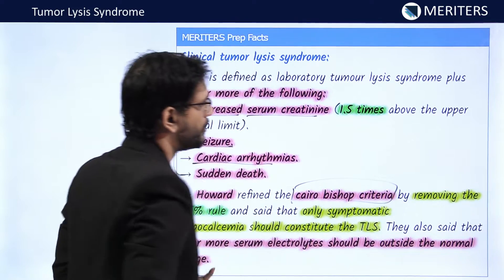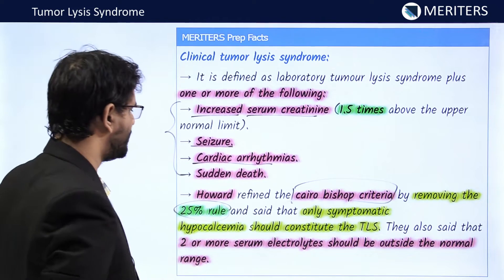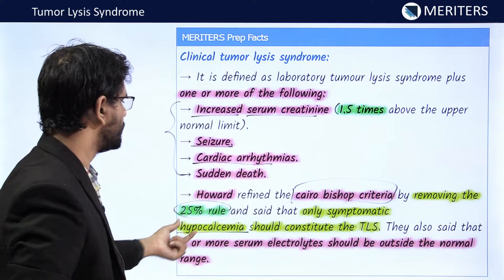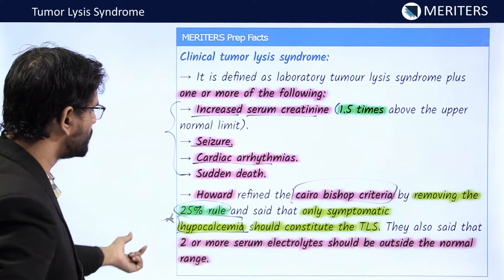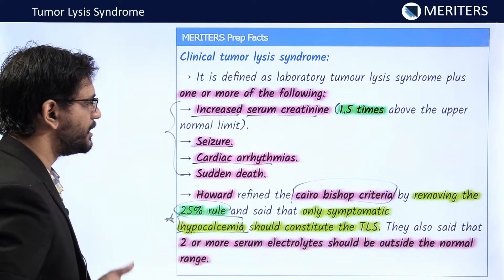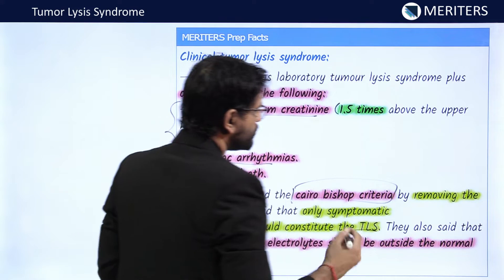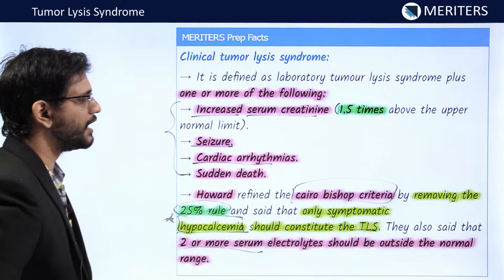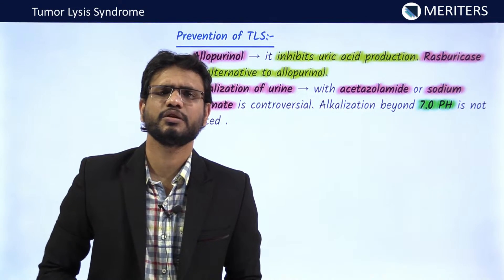Howard later redefined the Cairo and Bishop criteria. He removed the 25% rule and stated that only symptomatic hypocalcemia should constitute TLS, given that hypocalcemia is the major cause of death. It was also advised that two or more serum electrolytes should be outside the normal range to qualify for TLS.